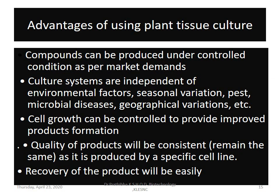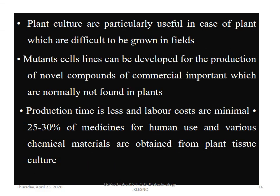Advantages of using plant tissue culture include: compounds can be produced under controlled conditions as per market demands; culture systems are independent of environmental factors, seasonal variation, pest or microbial diseases, and geographical variations; cell growth can be controlled to produce improved product formation; quality of products will be consistent as it is produced by a specific cell line; recovery of the product will be very easy; mutant cell lines can be developed for novel compounds; production time is less and labor costs are minimal. Approximately 25-30% of medicines for human use are obtained from plant tissue culture.